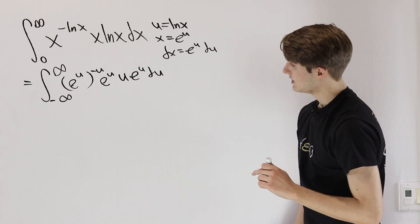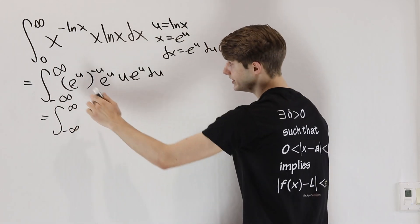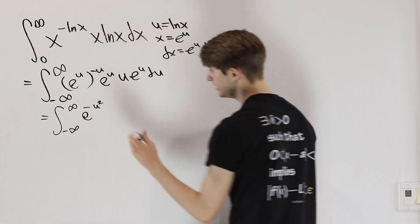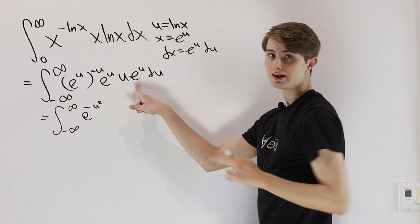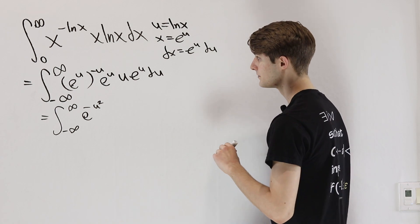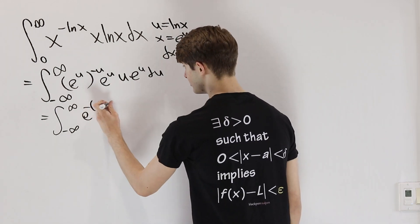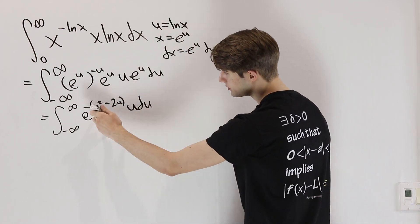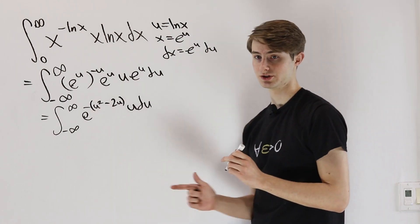Expanding everything out, we get the integral from negative infinity to infinity. The e to the u times negative u gives e to the negative u squared. Then we have two more exponentials: e to the u times e to the u, which we write as e to the 2u. Bringing that inside, we get e to the power of negative u squared minus 2u, so everything is in terms of this one exponential.